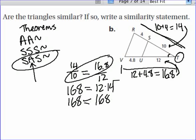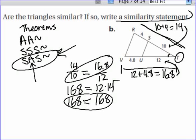So the two triangles are similar via side-angle-side theorem. So, now what I need to do is write that similarity statement.